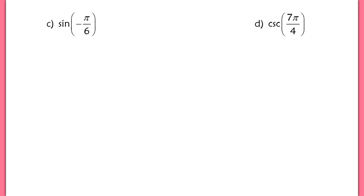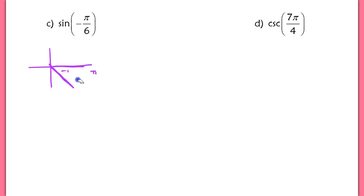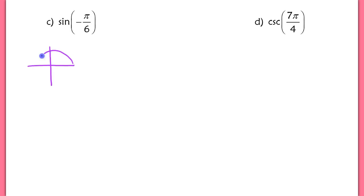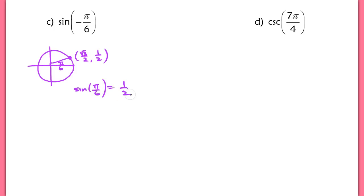For sin(−π/6): negative π/6 goes clockwise into the fourth quadrant, so the reference angle is simply π/6. Looking at π/6 in the first quadrant — the low point — the coordinate is (√3/2, 1/2). So sin(π/6) = 1/2. But since −π/6 is in the fourth quadrant, the y-value becomes negative. Therefore, sin(−π/6) = −1/2.